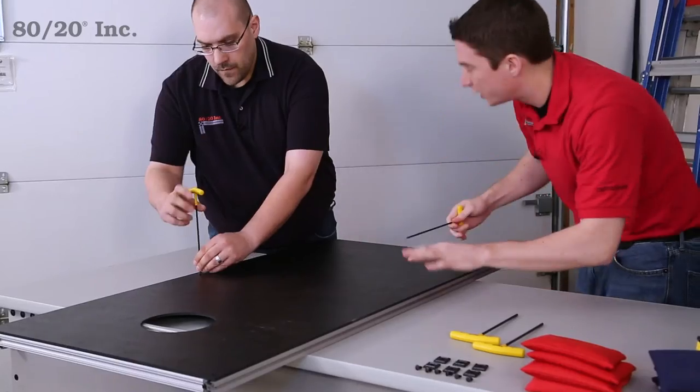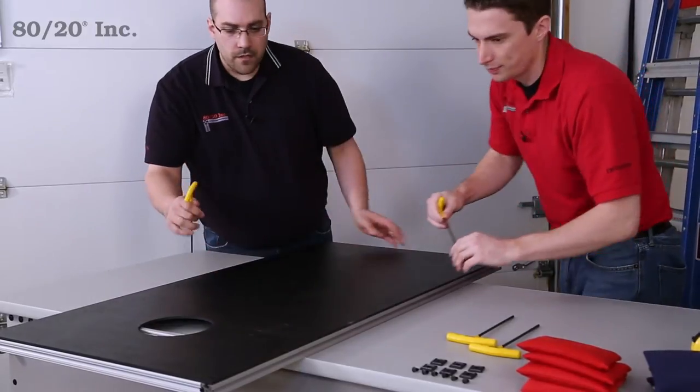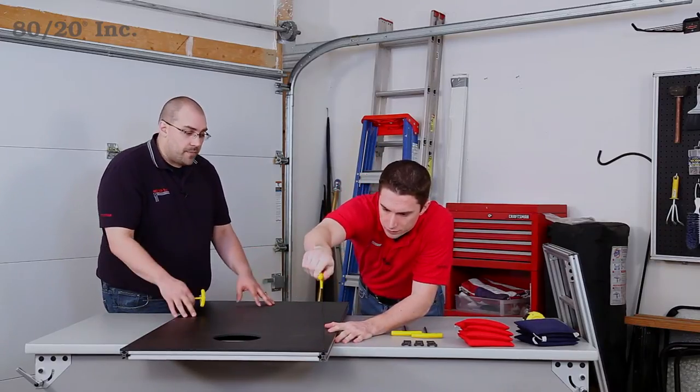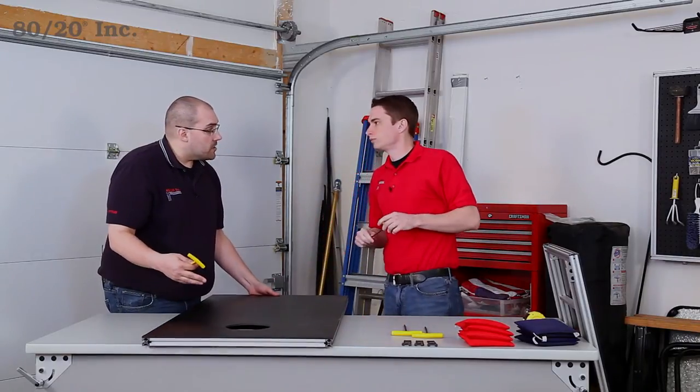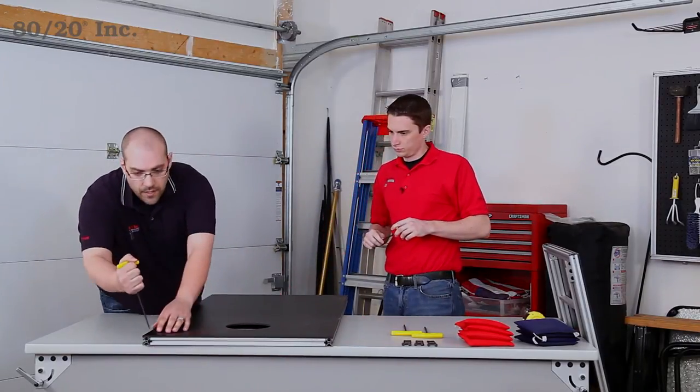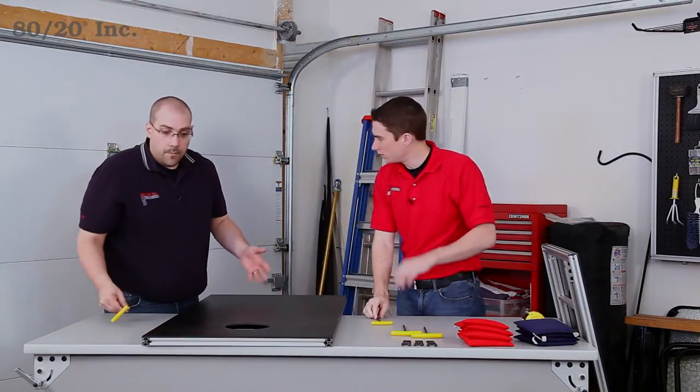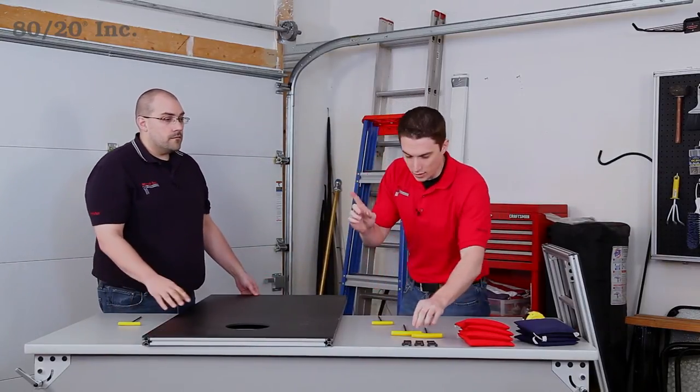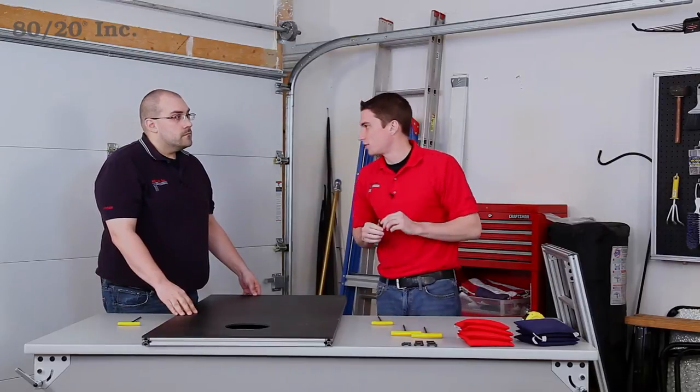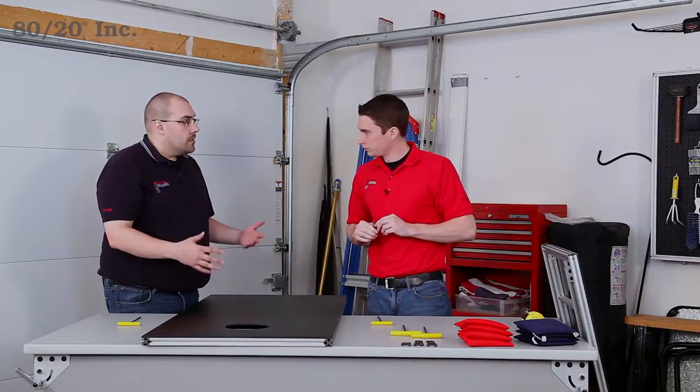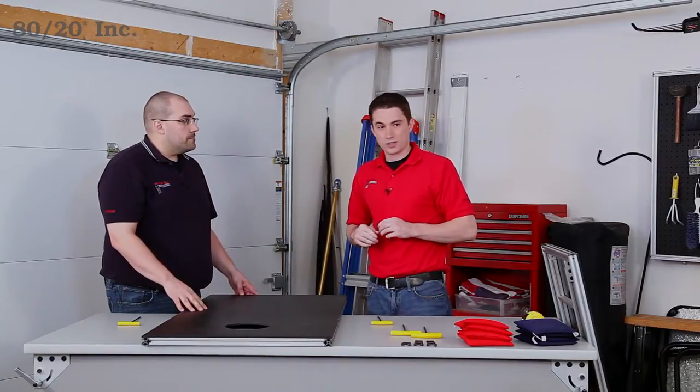I really like this panel because they countersink the bolts into it so nothing can get snagged on it while you're playing. Another great thing about these panels is the fact that if anything happens to this, it gets scratched or damaged, or we just want to change the color, we can slide this right out and put a new one right in its place. One last thing we want to do is put some end caps on. End caps are going to give this a nice clean finish and we'll be finished after that.